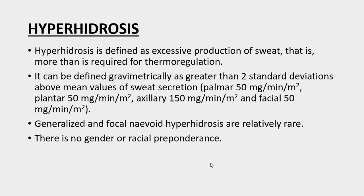Hyperhidrosis is defined as the excessive production of sweat beyond what is required for thermoregulation. It can be defined gravimetrically as greater than two standard deviations above the mean value of sweat secretion — specifically greater than 50 mg per minute per meter squared for palmar, plantar, and facial skin, and 150 mg per minute per meter squared for axillary skin.